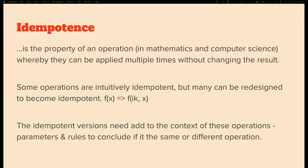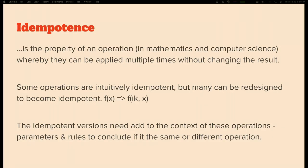Idempotence is a property of an operation. Wikipedia says it's in mathematics and computer science, but I believe it can be expanded more broadly. The idea is that an operation can be applied multiple times without changing the result. When I ask you to raise your hand if you know what idempotence is, you raise it. If I ask you again, you raise it again — because the result is the same: your hand is raised.